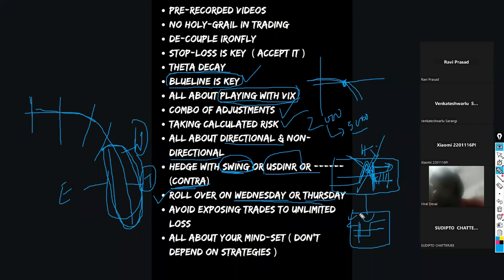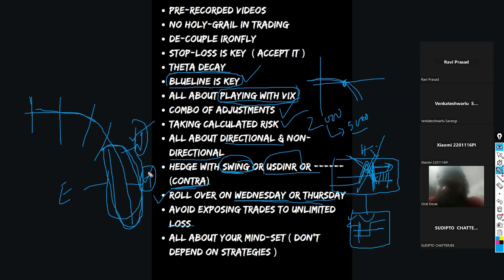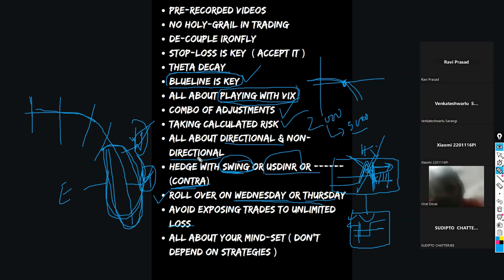Avoid exposing trades to unlimited loss. If you want to convert Iron Fly to unlimited loss strategies like naked straddle or strangle, only do it on Wednesday and Thursday — because managing for two days is much easier than five days, and you take advantage of theta decay. Final point: it's all about mindset. Don't depend on any strategy rigidly. Understand the pros and cons of reverse buying and broken wing fly before using them.